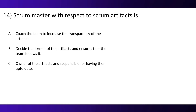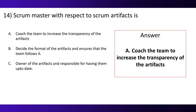Question 14. The scrum master with respect to scrum artifacts is: Option A, coach the team to increase the transparency of the artifacts. Option B, decide the format of the artifacts and ensure that the team follows it. Option C, owner of the artifacts and responsible for having them up to date. And the correct option is A — coach the team to increase the transparency of the artifacts.